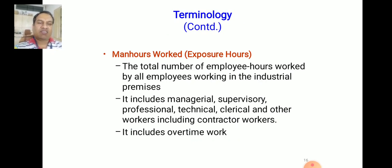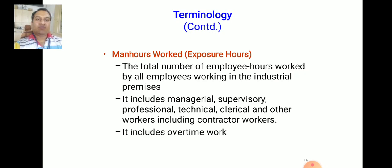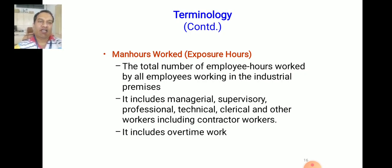Man Hours Work is the total number of employee hours worked by all employees working in the industrial premises. It includes managerial, supervisory, professional, technical, clerical, and all other workers including contractor workers. As far as the Factories Act is concerned, all these workers — at any level — are included. For example, if 100 people work for 8 hours, that is 100 × 8 = 800 man hours work. It includes overtime as well.